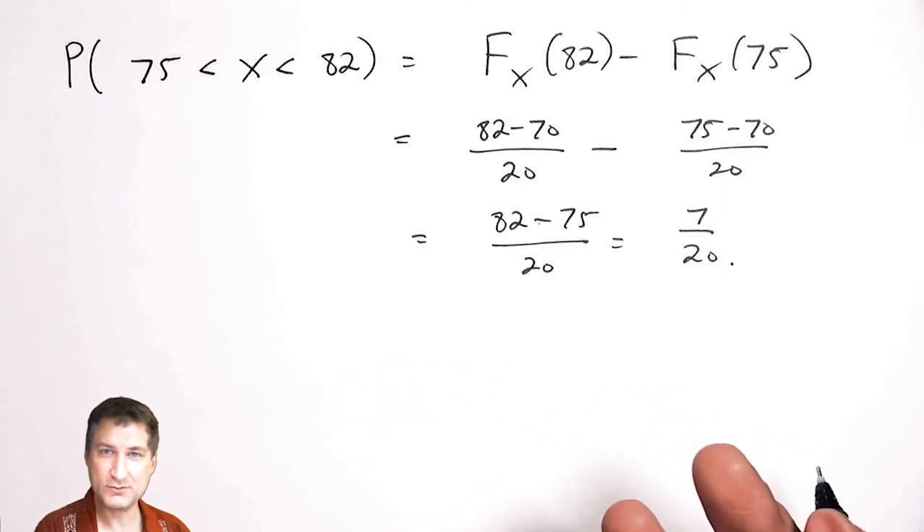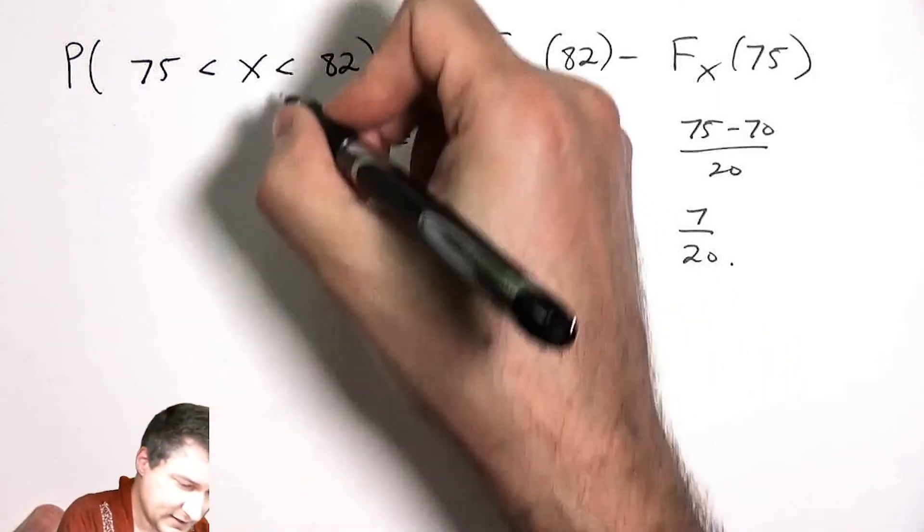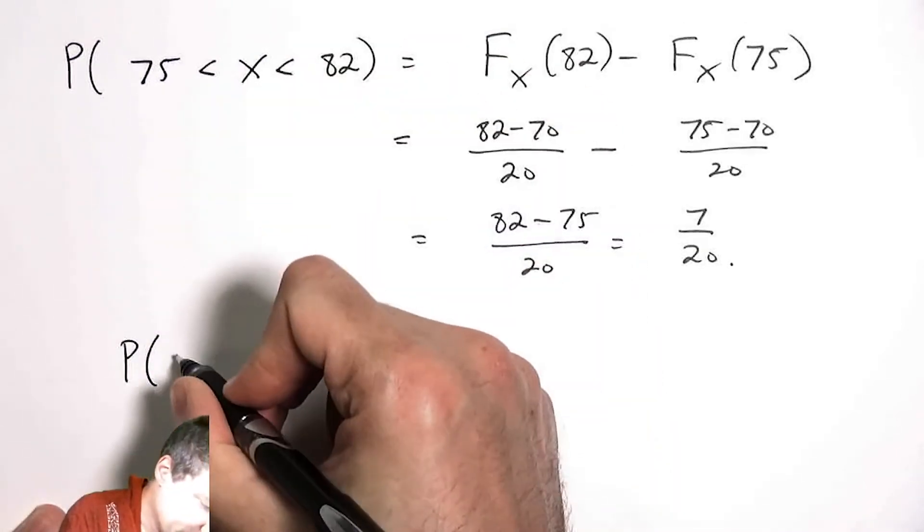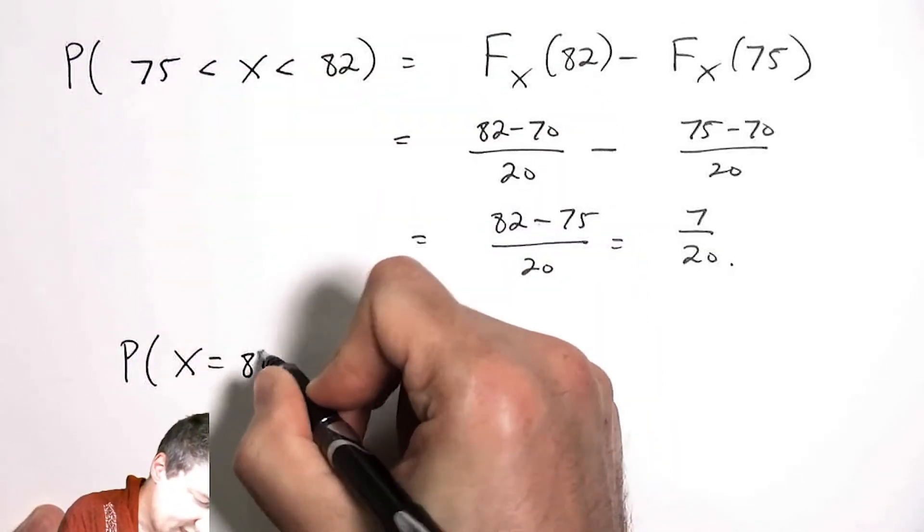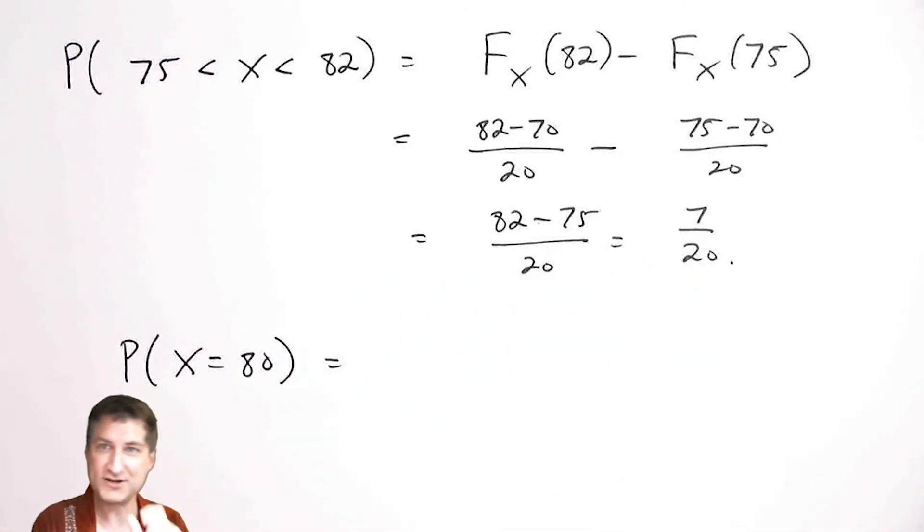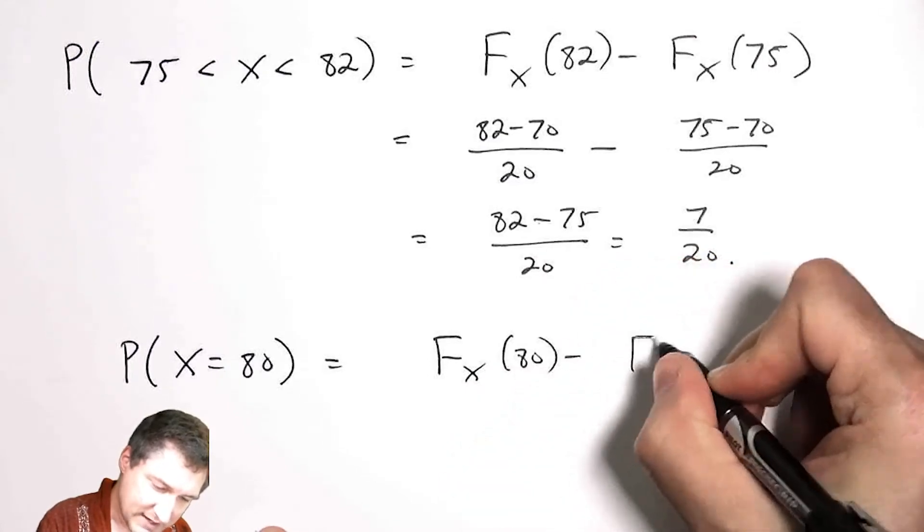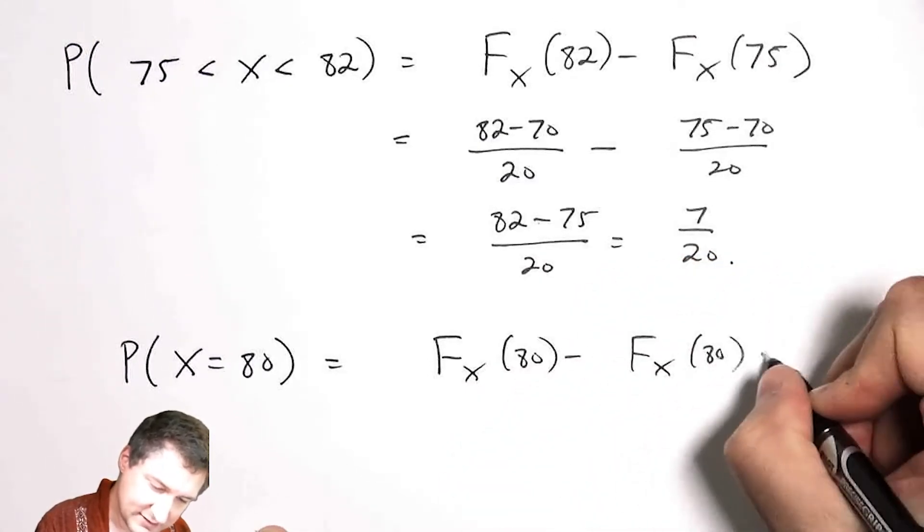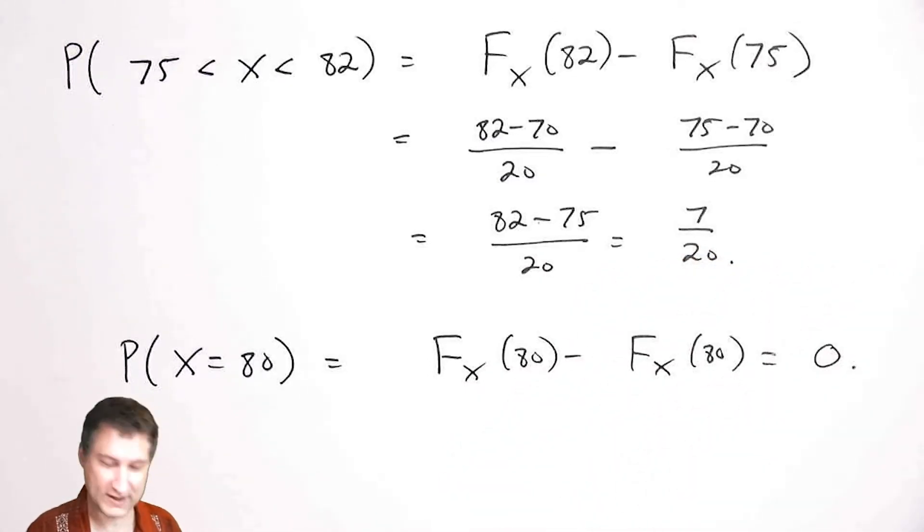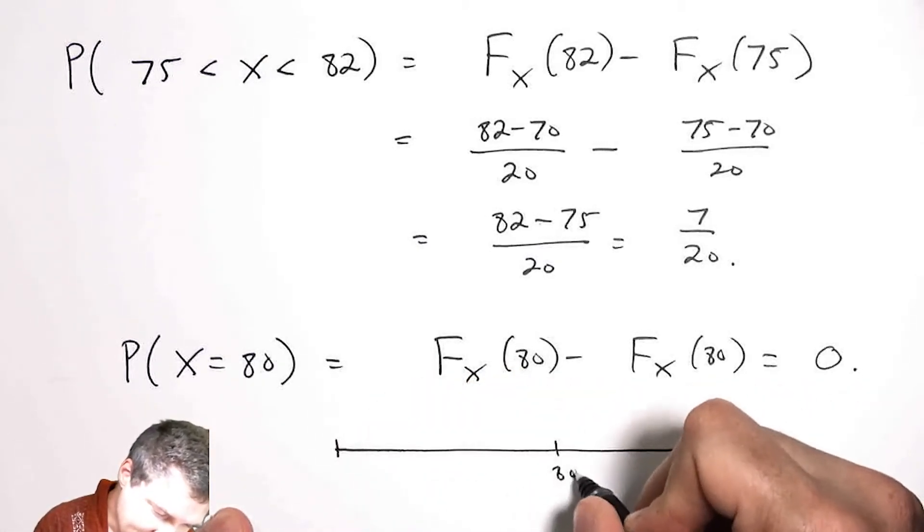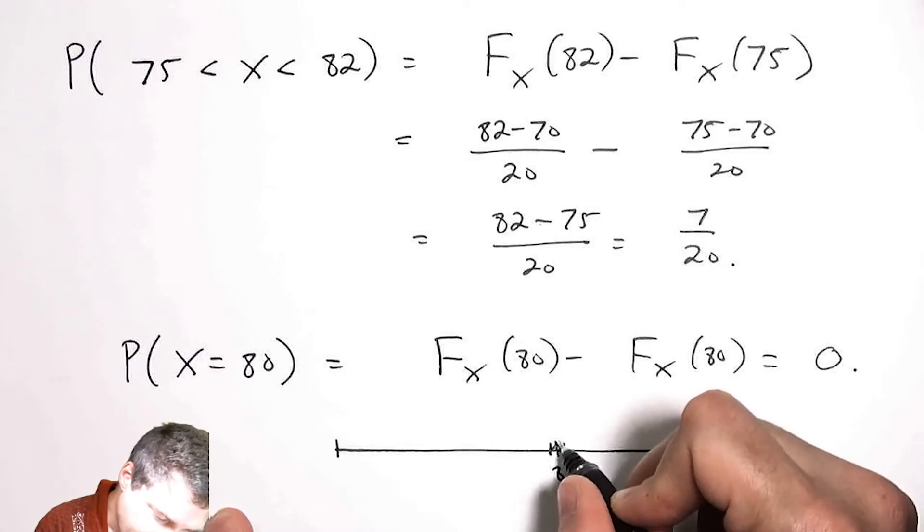We talked earlier about how a continuous random variable generally has probability zero of being any particular value. The reason for that is that the probability that x equals 80, for example, that's like saying, well, what are my two endpoints? It's like I have the endpoint of 80 minus the endpoint of 80 is zero.